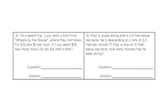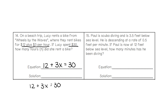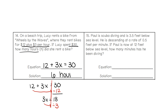Beach trip word problem: Lucy rents a bike from Wheels by the Waves where they rent bikes for $12 plus $3 per hour, represented by 3x, and she spent a total of $30. Taking that equation, we start with the 12 — the opposite of 12 is minus 12. We still have 3x, and 30 minus 12 gives 18. Our final step is to divide: 18 divided by 3 gives 6. So she rented her bike for 6 hours.